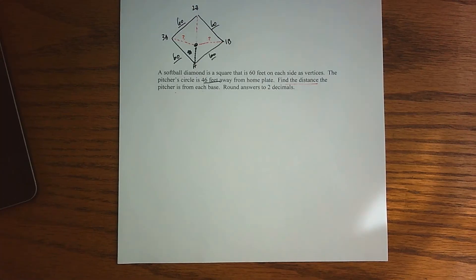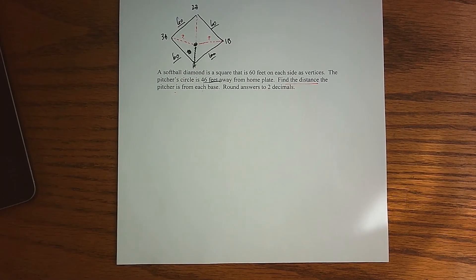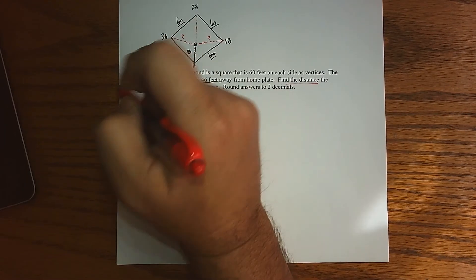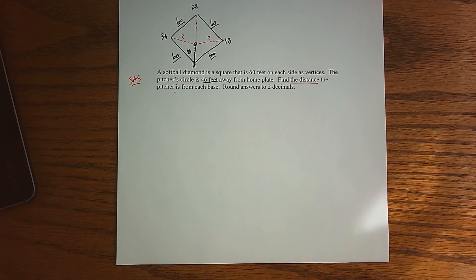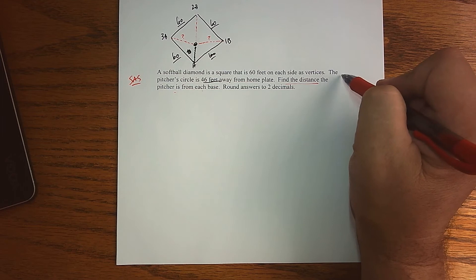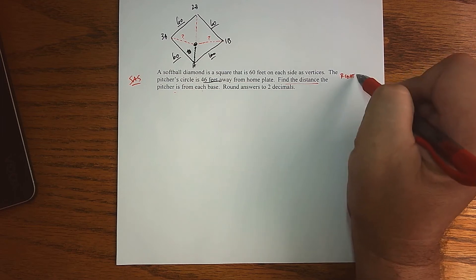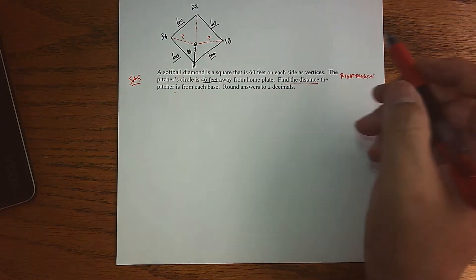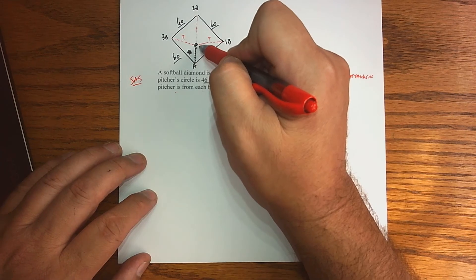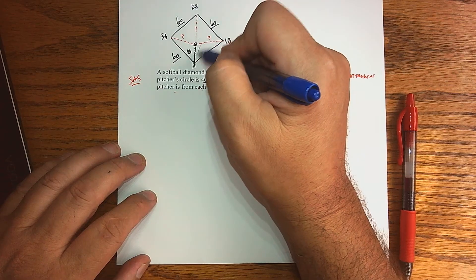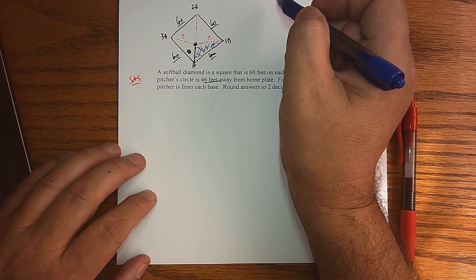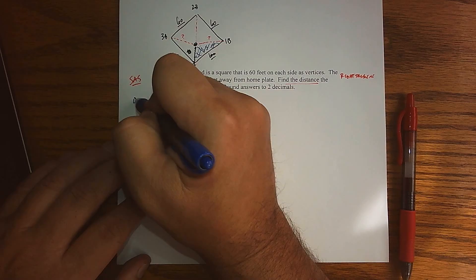It turns out that when we analyze this, we have to begin with an SAS oblique triangle. And then, believe it or not, to do the next one, to get further, we're actually going to make use of a right triangle, but I'm getting ahead of myself. For the SAS, what we have to do is consider this oblique triangle right there.